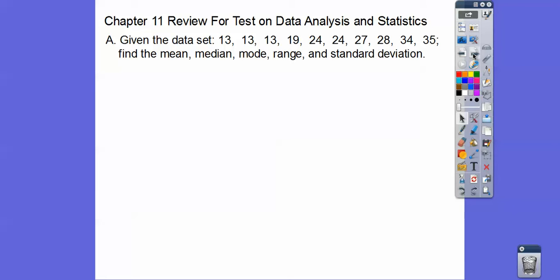So given this data set — there are 10 numbers. Find the mean, median, mode, range, and standard deviation. The mean is: you add up all those 10 numbers and divide by 10, and you should get 23.